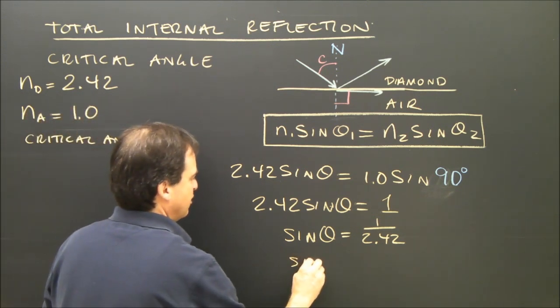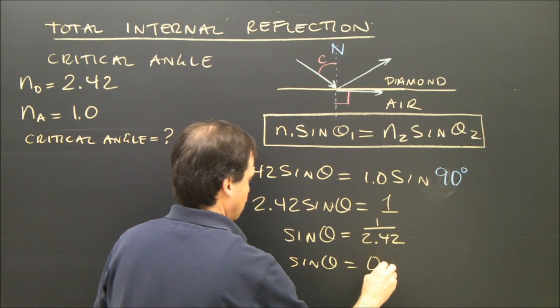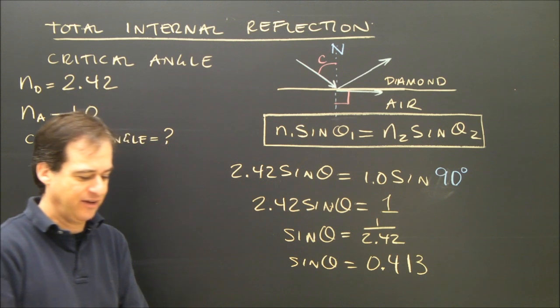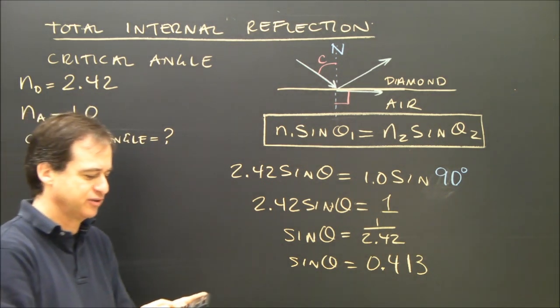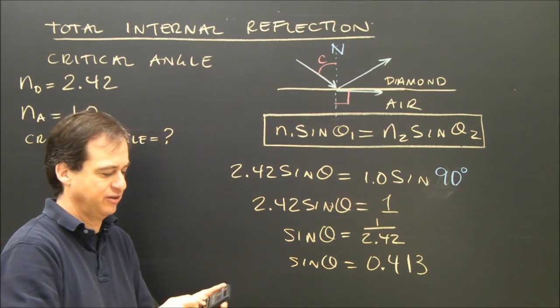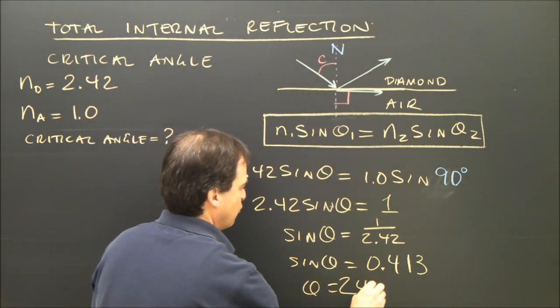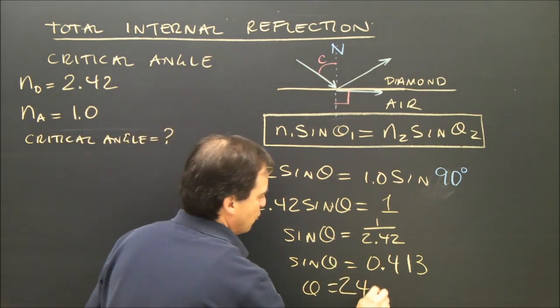1 divided by 2.42 is, sine of that angle is 0.413. In order to find the angle, I have to hit inverse, or second function, or shift, depends on your calculator, sine. I get the angle is 24.4, we're rounded to 24 degrees.